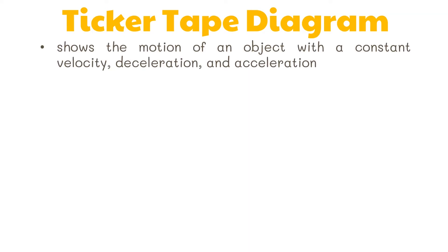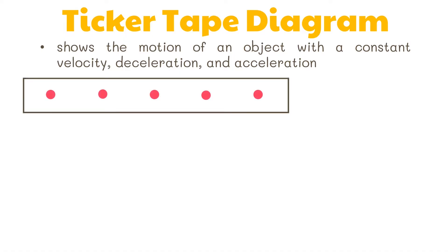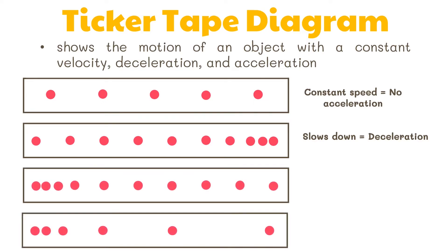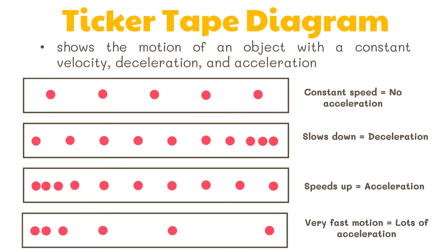The dots on the tape chart also show the motion of an object with constant velocity, deceleration, and acceleration. The interpretation of the motion depends on the distance between the dots during a specific time interval. Equal distance between the dots indicates constant velocity — when an object is moving at a constant speed with no acceleration. A gradual decrease in the distance between dots means the object slows down, indicating deceleration. If the distance between dots gradually gets longer, it means the object speeds up or accelerates.